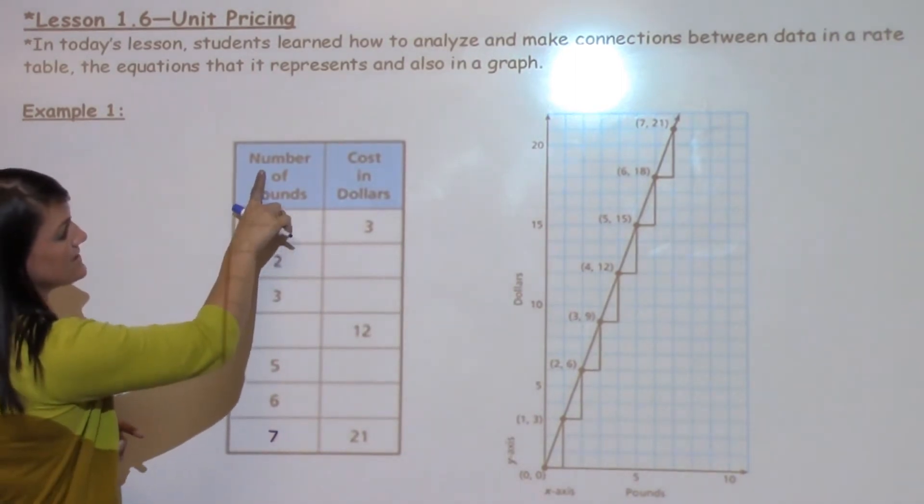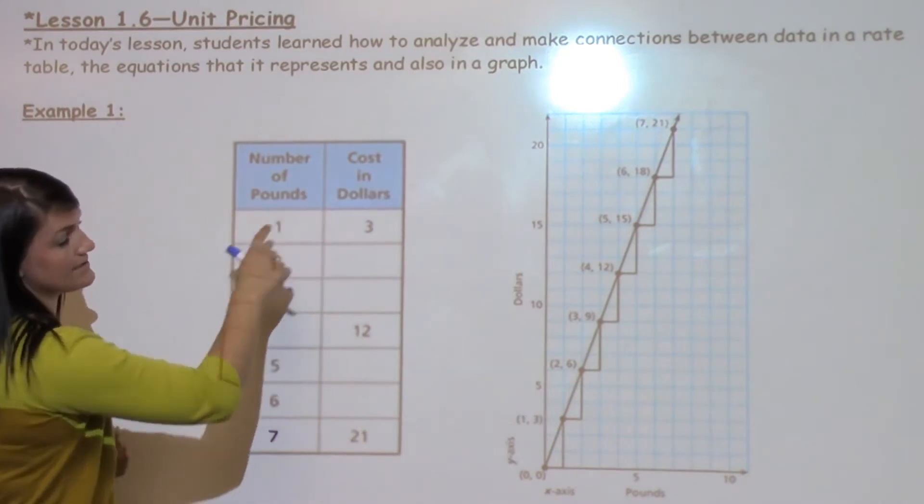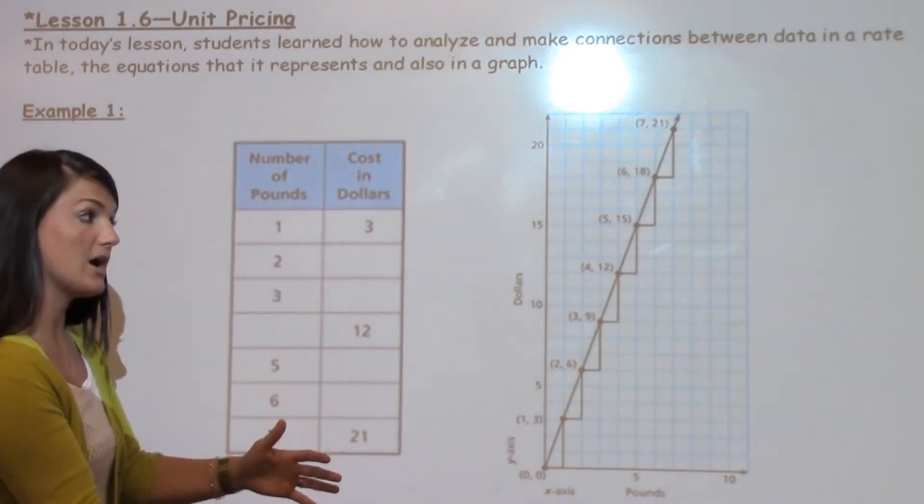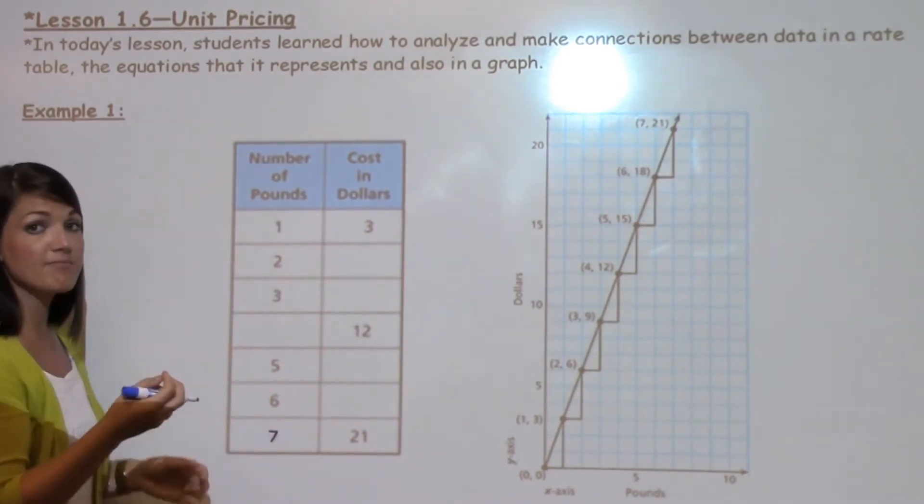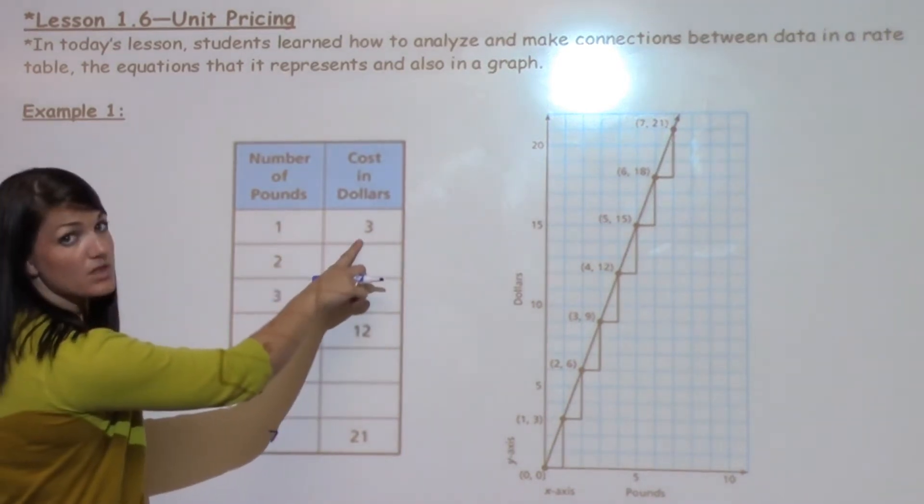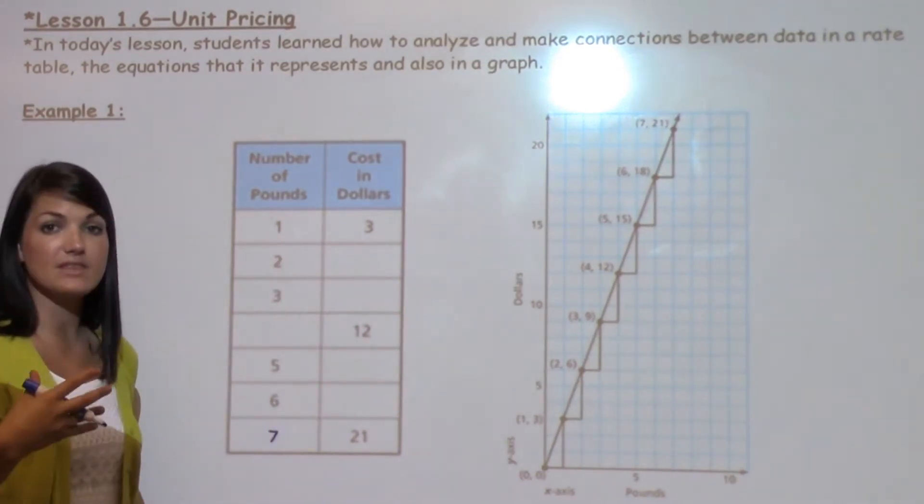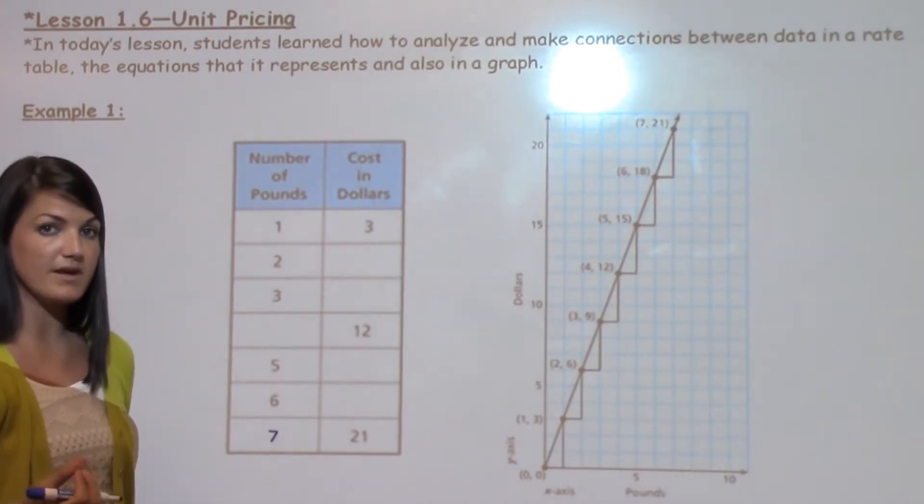When I look at this situation, it says number of pounds and cost in dollars. So I'm looking at pounds and how much it costs me. I have my unit rate because I have a number that's connected with the one. So this makes everything else a little bit easier once I have my unit rate.